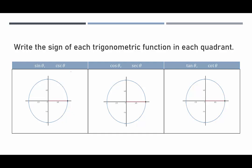Sine and cosecant deal with y. In quadrant one, y is positive so sine is positive. In quadrant two, y is positive so sine is positive. In quadrant three, y is negative so sine and cosecant are negative. In quadrant four, y is negative so sine is negative. So sine and cosecant are only positive in quadrants one and two.